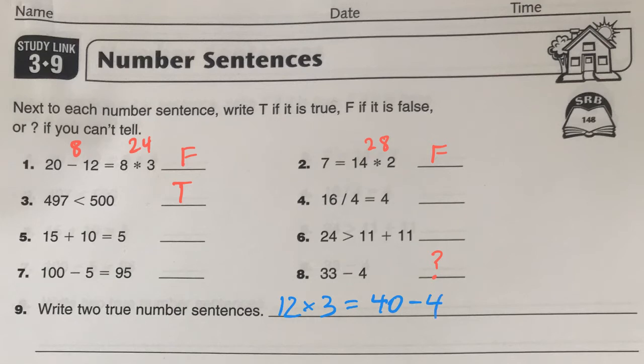And maybe I want to do one with a greater than. So how about I say 6 times 5 is greater than 5 plus 20. And that would be true.